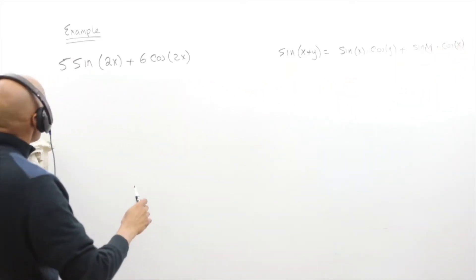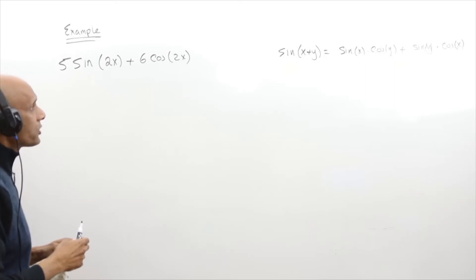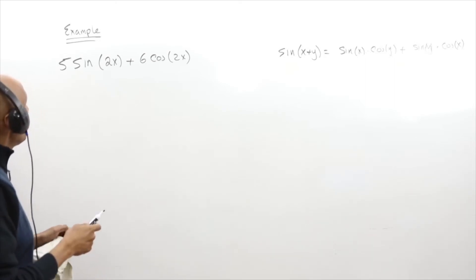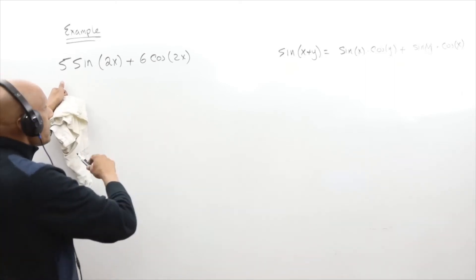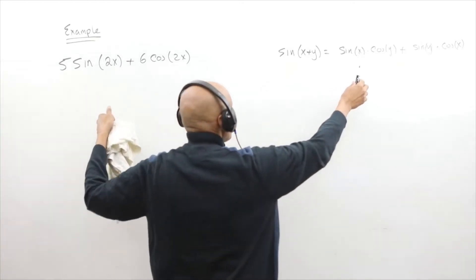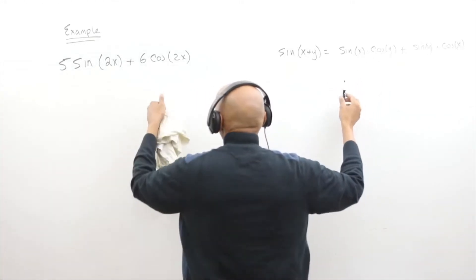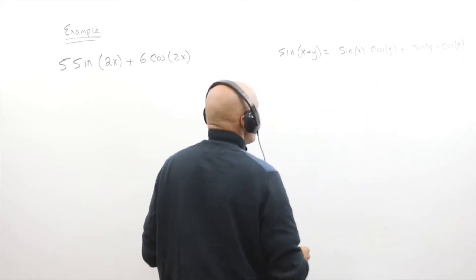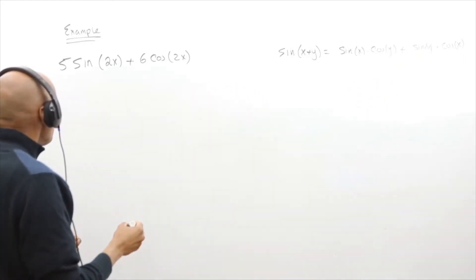So if I look over here, it doesn't look like this function sine x cosine y, but I'm going to force it. I want it to be a sine function, so in front of the sine I'm going to somehow magically convert this into something with a cosine and the 6 something with a sine.